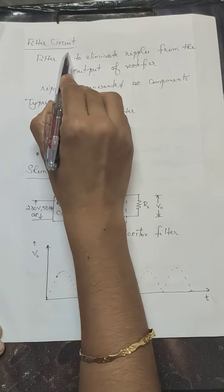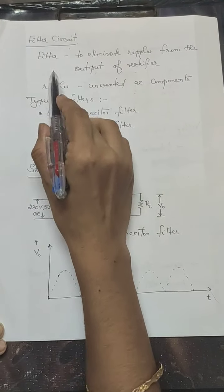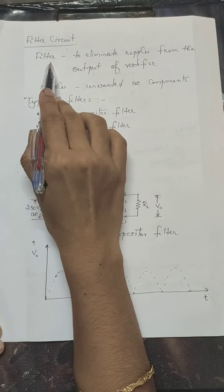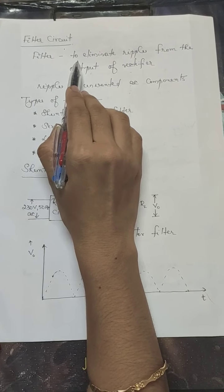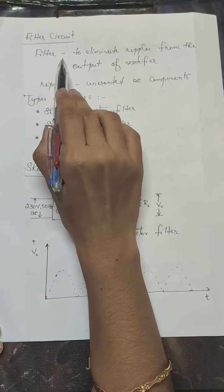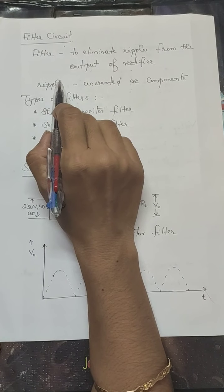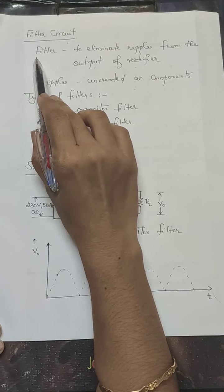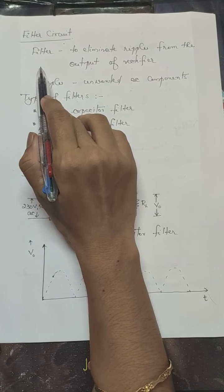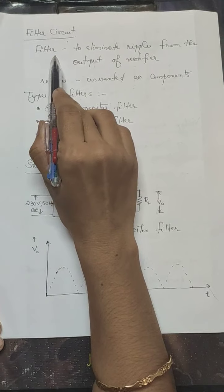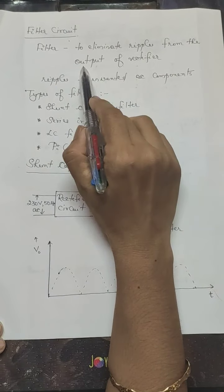The next part of a regulated DC power supply is the filter circuit. We know that the output of a rectifier is not a constant DC voltage. It is a pulsating DC voltage which contains ripples. So we have to use a filter in between the rectifier output and the load, and the purpose of the filter is to eliminate the ripples from the output of the rectifier.